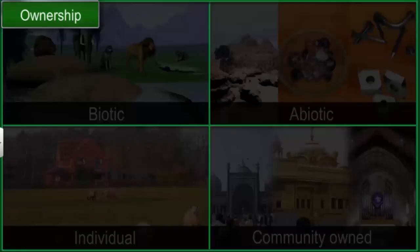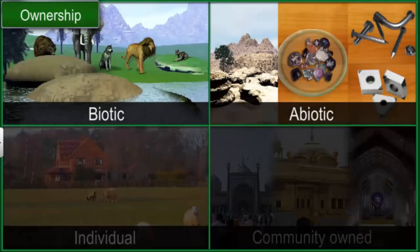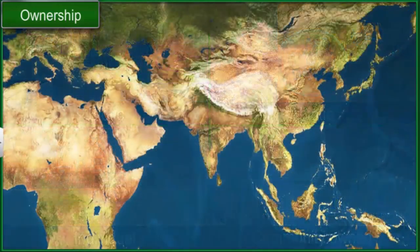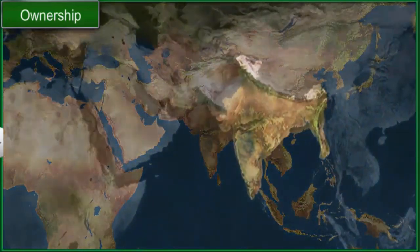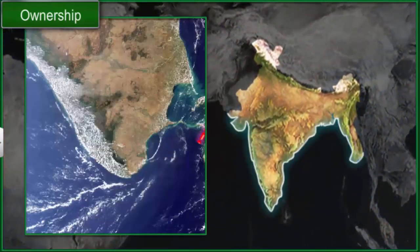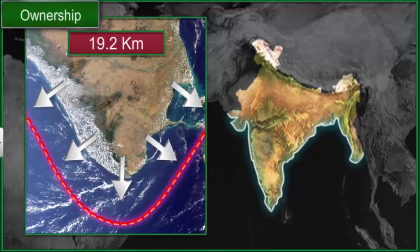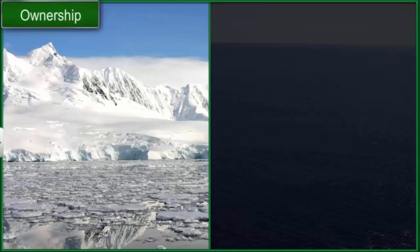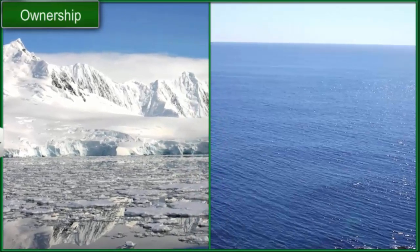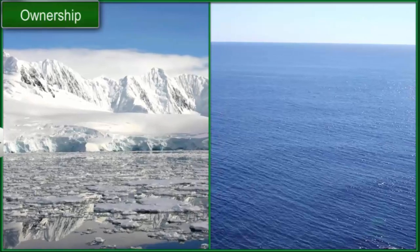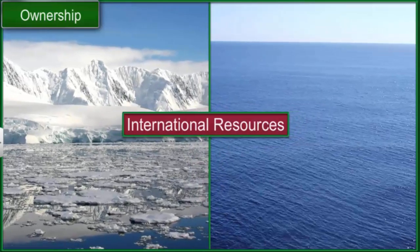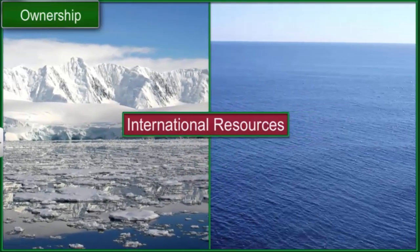All resources, whether biotic or abiotic, individual or community-owned, ultimately belong to the country. These include all the resources within the political boundaries of a country and till 19.2 kilometers into the sea from its coast. There are still some parts of land like the icy continent Antarctica and the vast stretches of oceans which are not owned by any particular nation. Resources found in these parts of the world are called international resources and are managed by institutions related to the United Nations.